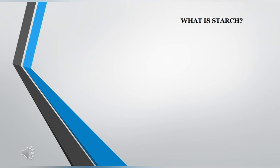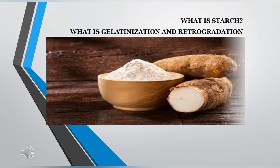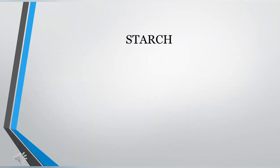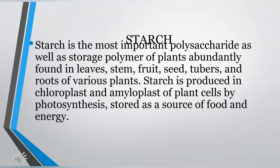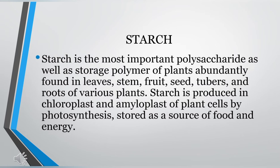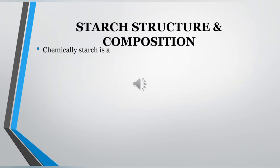Today the topic we are going to study is what is starch, and what is gelatinization and retrogradation. Starch is the most important polysaccharide as well as storage polymer of plants, abundantly found in leaves, stem, fruit, seed, tubers, and roots of various plants. Starch is produced in chloroplasts and amyloplasts of plant cells by photosynthesis, and stored as a source of food and energy.